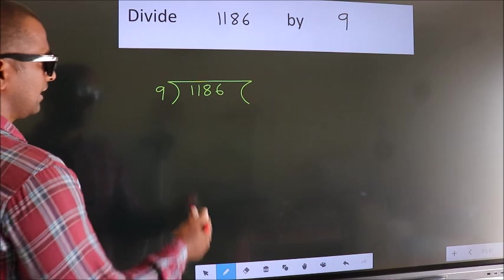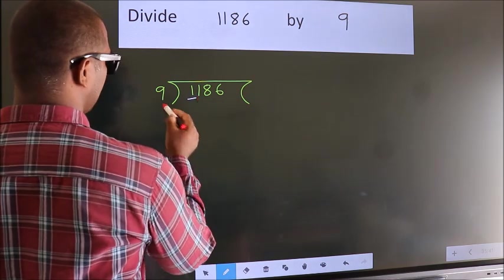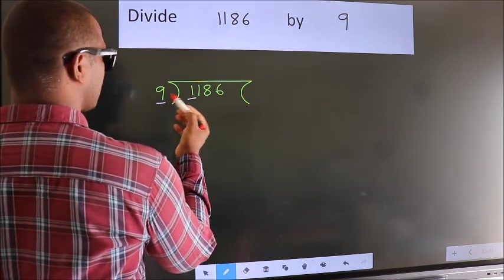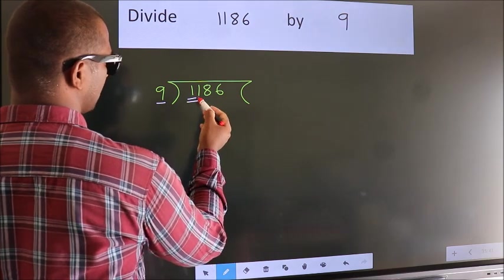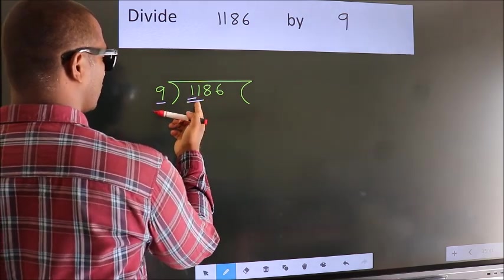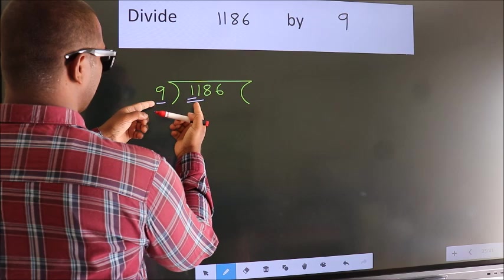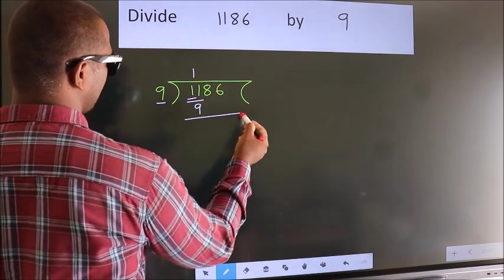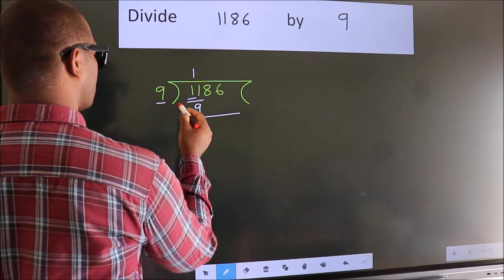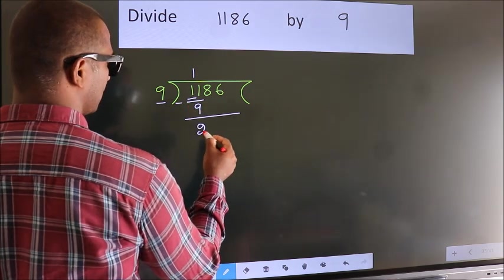Next. Here we have 1. Here 9. 1 smaller than 9. So we should take 2 numbers. 11. A number close to 11 in 9 table is 9 once 9. Now we should subtract. We get 2.